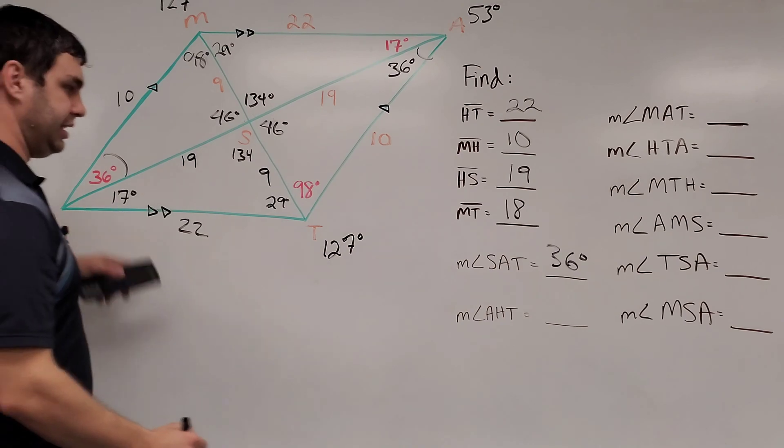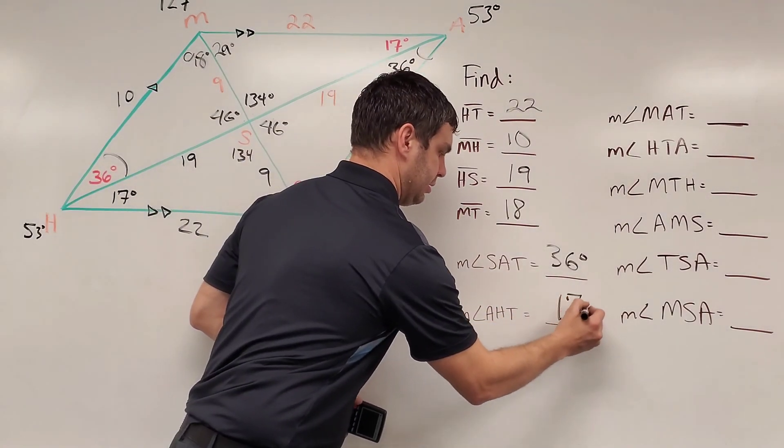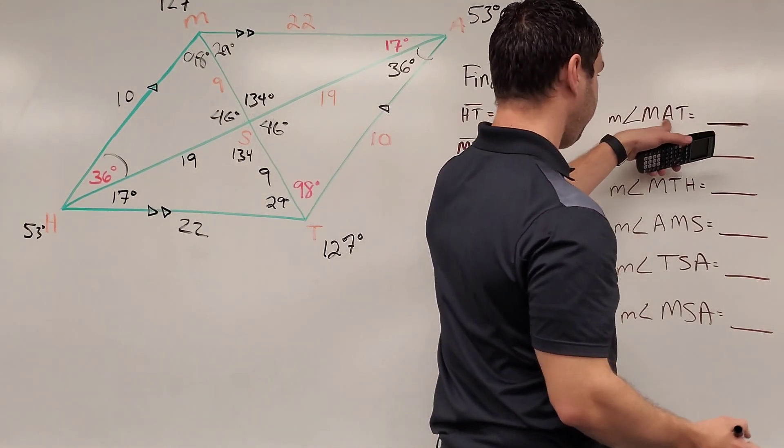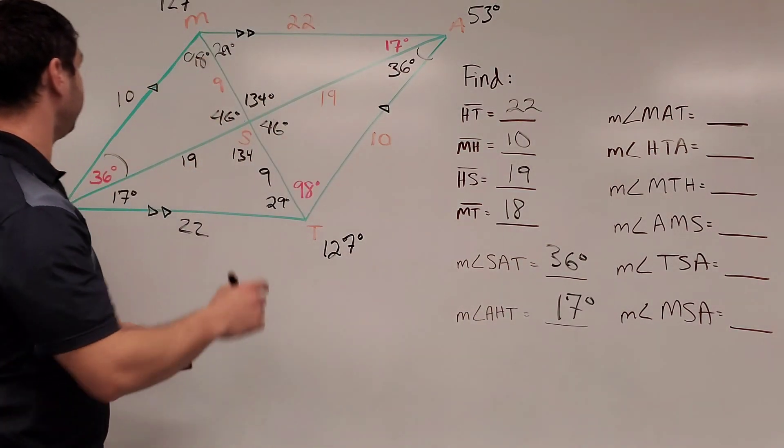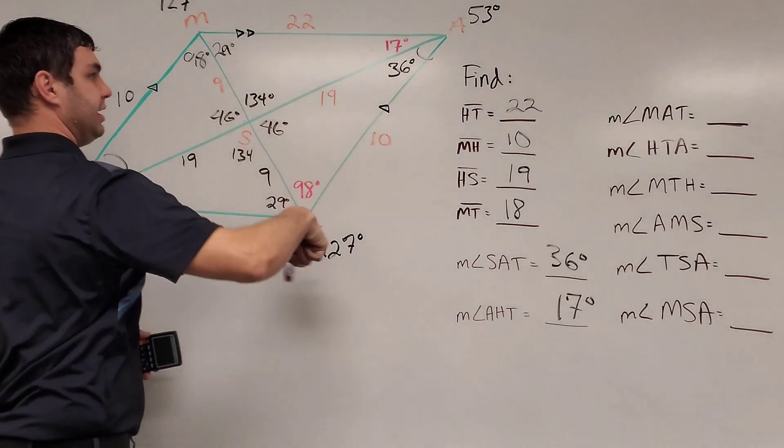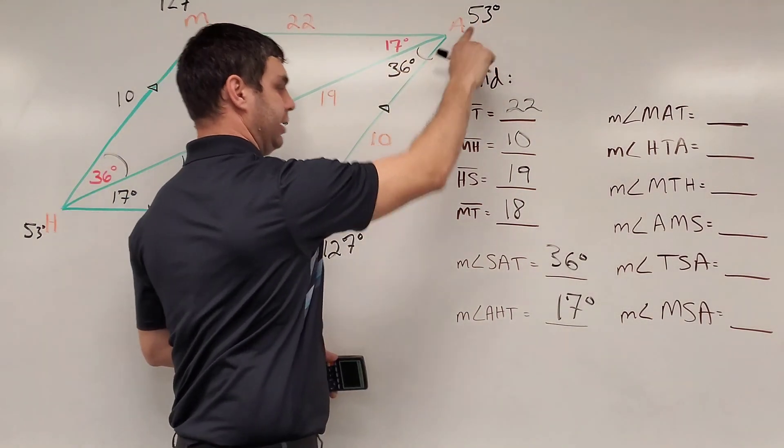AHT, AHT, so that's the 17. And the MAT, let's try to get out of your way here. MAT, that's all of angle A. Remember that's on the outside, we call that 53.